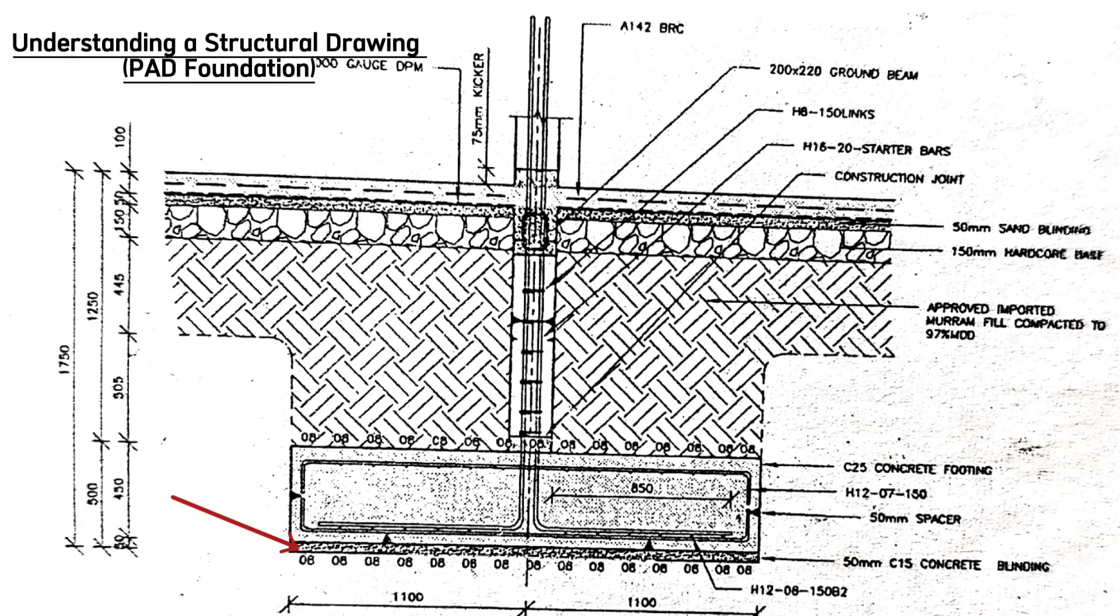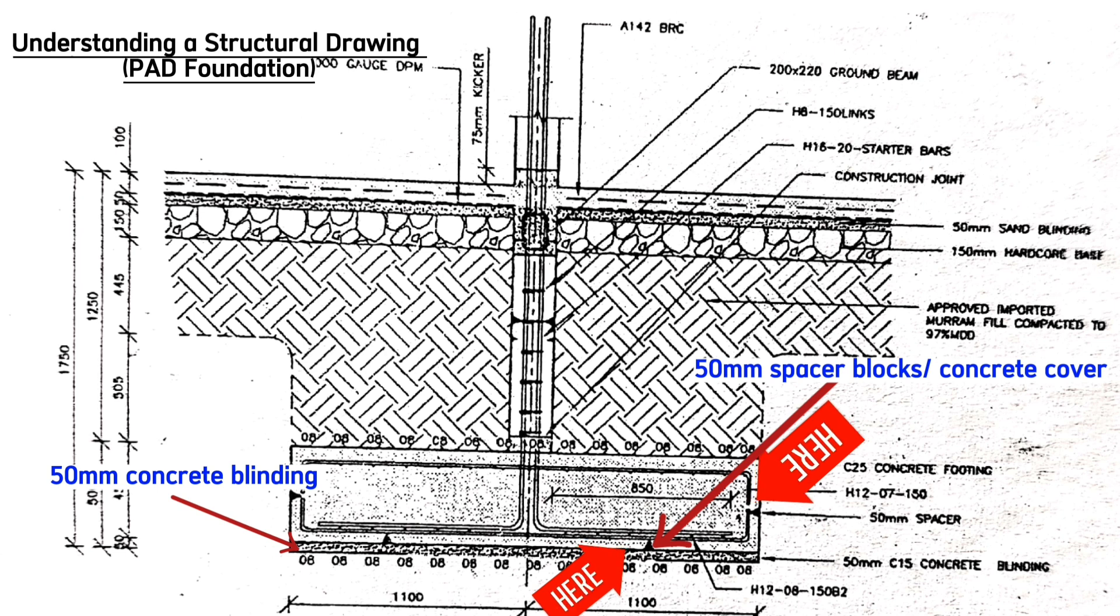The first layer here is 50 millimeters thick mass concrete blinding. After concrete blinding, these are spacer blocks. In the foundation, we use 50 millimeters spacer blocks or concrete covers both at the bottom and in the sides.